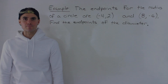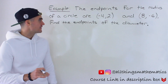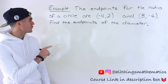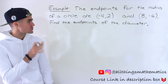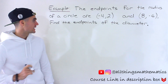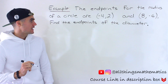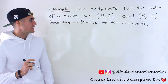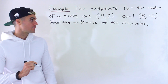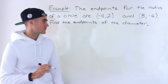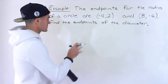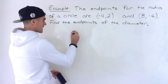Welcome back. Patrick here. In this next video we are told that the endpoints for the radius of a circle are at negative 4 and 2, and 8 and negative 6, and we have to find the endpoints of the diameter of this circle. There's actually going to be two solutions to this as a heads up.